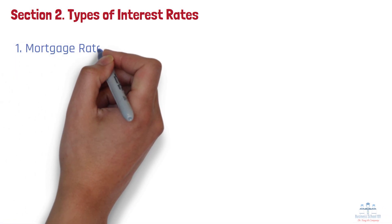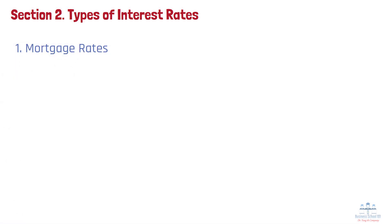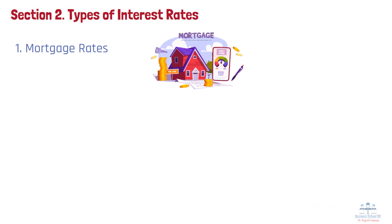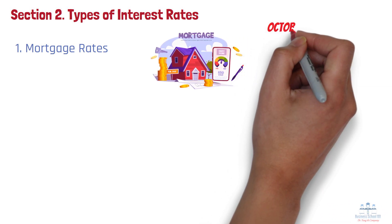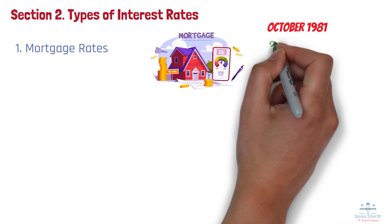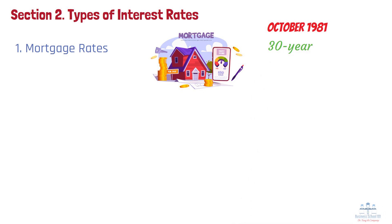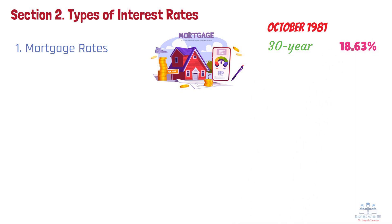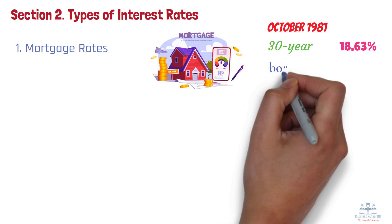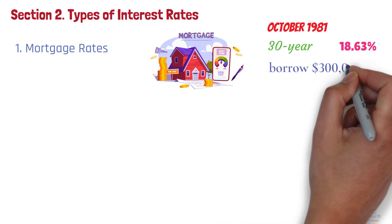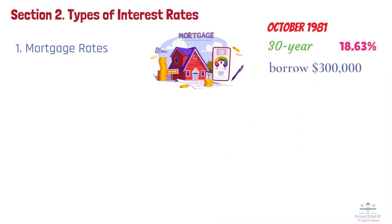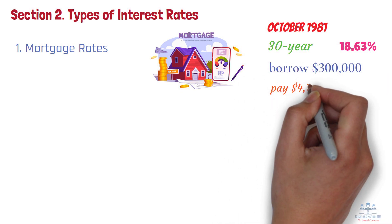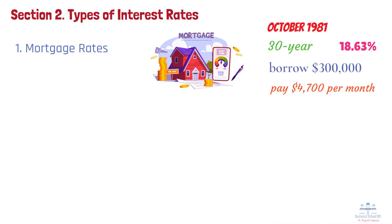Economists and financial experts look at different types of interest rates. First, mortgage rates — the interest rate on home loans. For example, in October 1981, 30-year fixed mortgage rates reached a historic high of approximately 18.63%. This means if someone borrowed $300,000 at that time, they would have had to pay around $4,700 per month, with the vast majority going to interest in the early years of the loan.